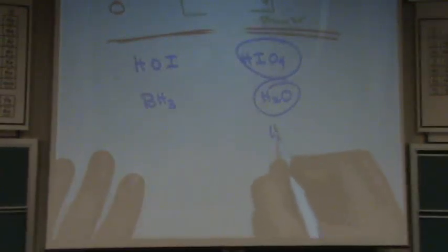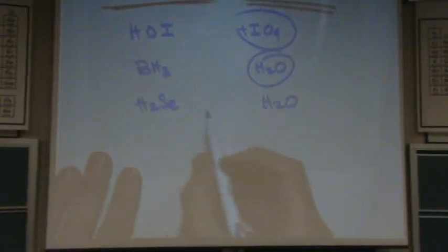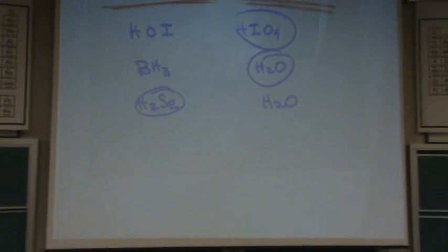How about, let's do H2O again and H2SE. Right or left? Left. Left is the stronger acid because selenium SE is lower on the periodic table than oxygen. Remember, as you go to the right and down, it gets stronger.